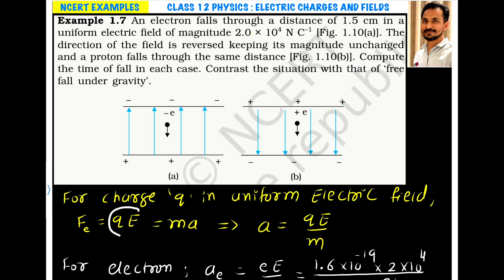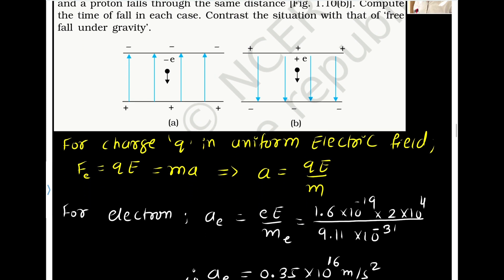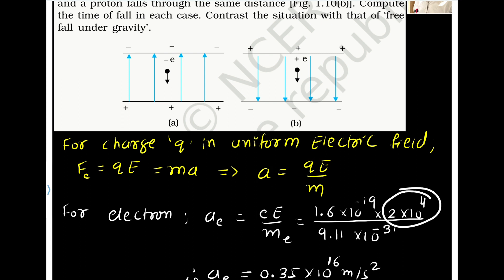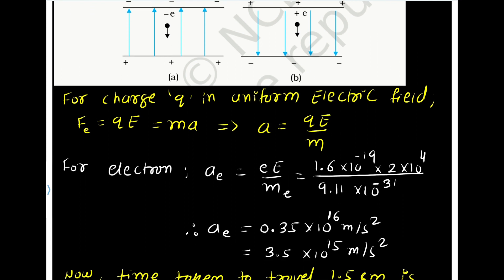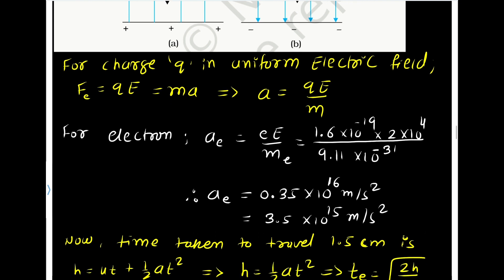For a charge in a uniform electric field, the force acting is given by F = QE. From Newton's second law, F = MA, so the acceleration produced on a charge due to the external field is given by A = QE/M. For the electron, we put the charge and mass of the electron, and the electric field is given as 2×10⁴. On solving, we get 3.5×10¹⁵ meter per second squared. The electron will accelerate uniformly with this acceleration.